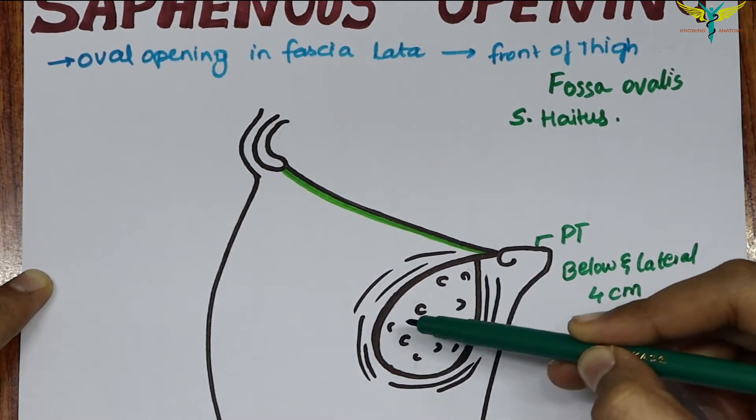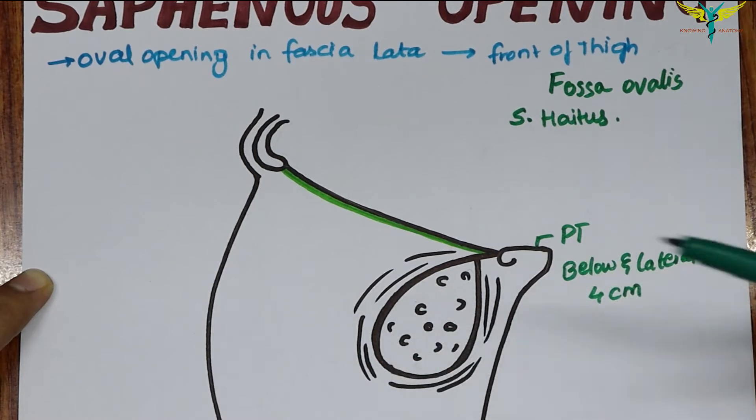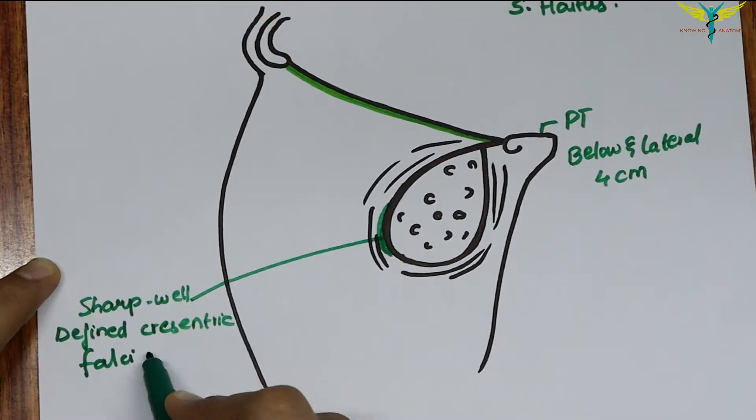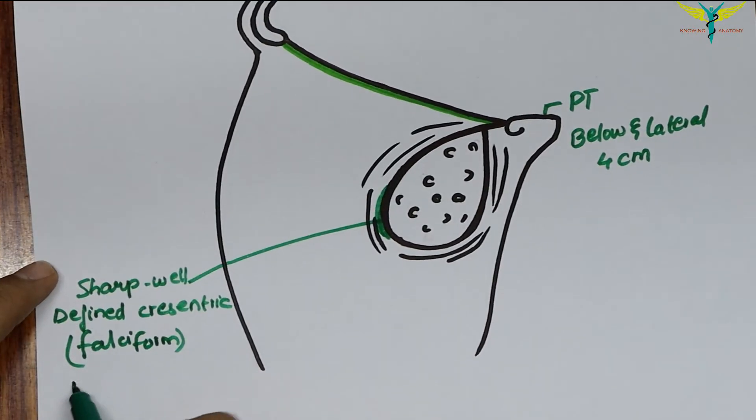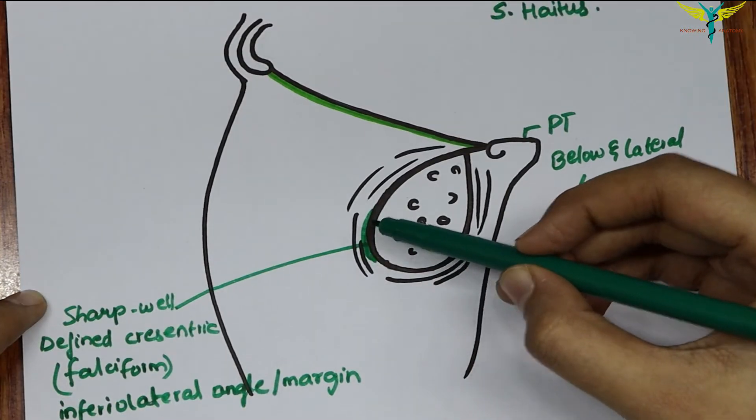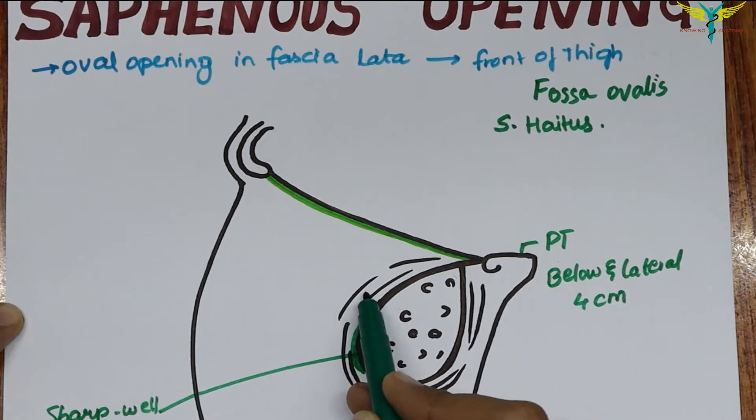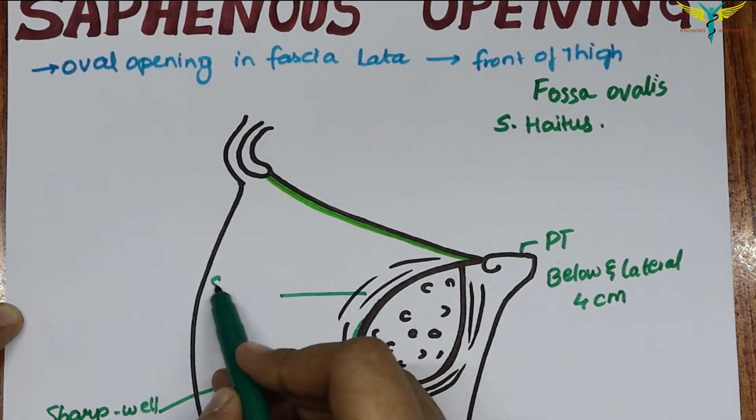The opening is bounded inferolaterally by a sharp crescentic falciform margin. This is the inferolateral angle, and this is formed by the superficial stratum of the fascia lata. This whole region is the superficial stratum of the fascia lata.